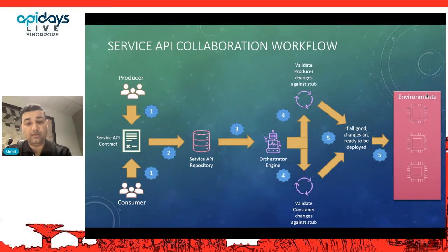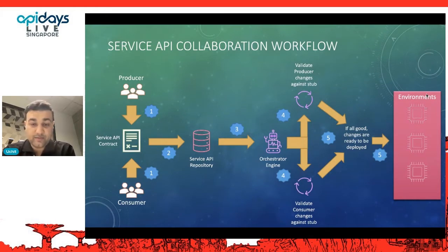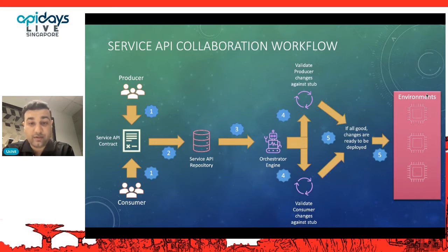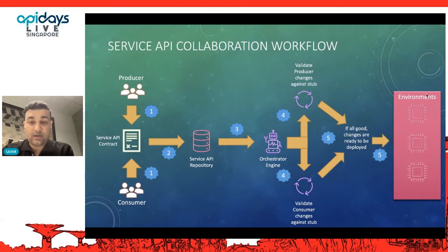From there, the orchestration engine — whatever you use in your CI/CD pipelines or DevOps lifecycle — picks it up from the service API repository, whether it is a containerized or non-containerized environment. There need to be prebuilt design jobs that understand when something has been changed, added, deleted, or modified in the repository. Once the contract is available, it triggers the orchestration engine, which then generates API stubs — because we are still at the design phase, applying a fail-fast strategy without going to dev or test phases yet.